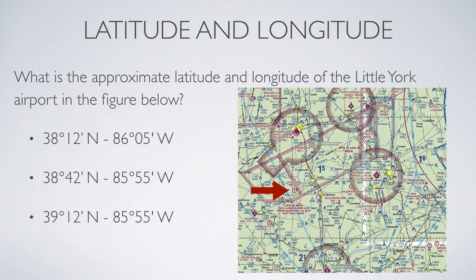First and foremost, the important thing to remember with latitude is that the equator is a line of latitude, and we know that the equator has a degree of zero degrees. If you think about the lines of latitude like the rungs on a ladder — latitude and ladder — each of the lines of latitude runs east to west. This means the further south you go, the smaller the numbers are going to get.